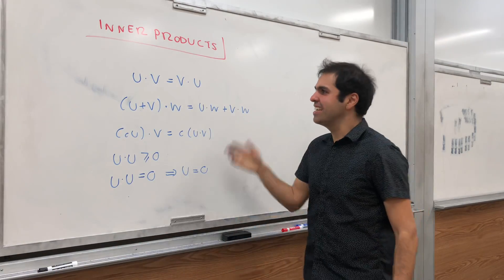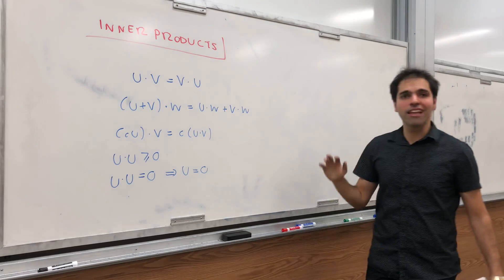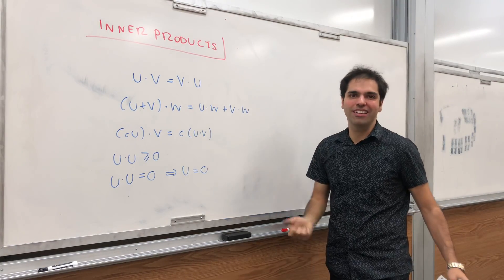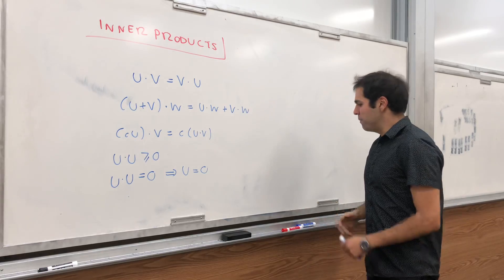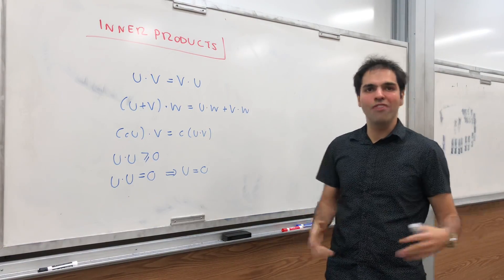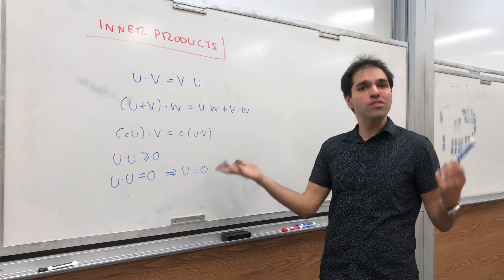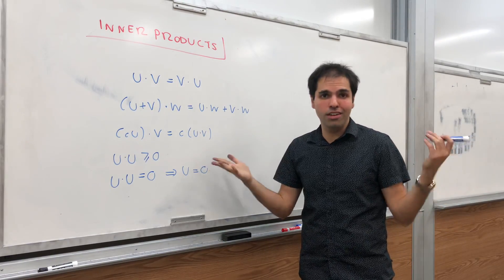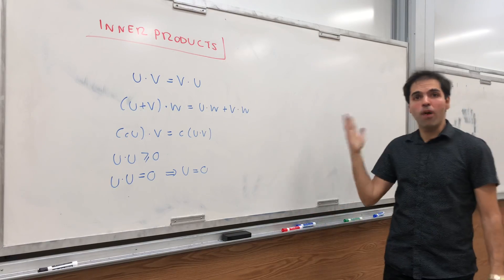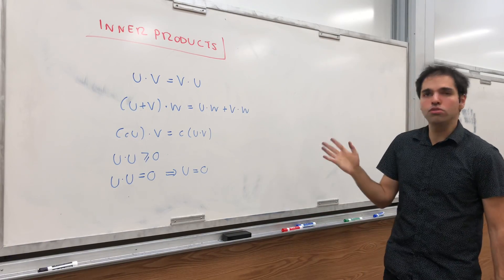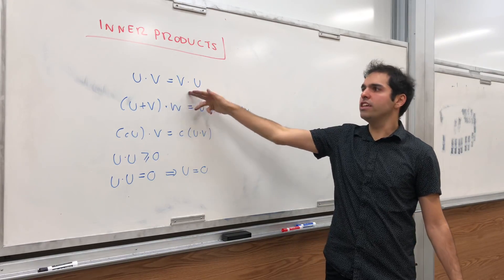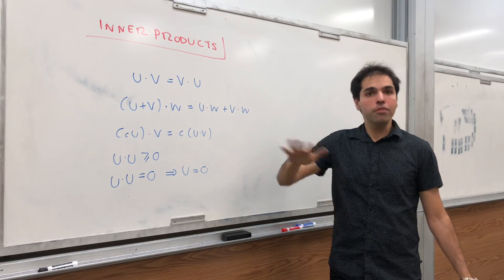Today I'd like to talk about inner products and inner product spaces. So far you've used dot products where you just dot two vectors in Rn. It turns out you can do it in a more general fashion, and really all the properties of dot products you use come down to just a few: u dot v equals v dot u.